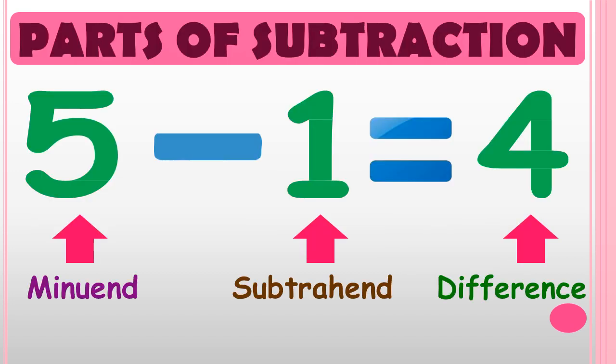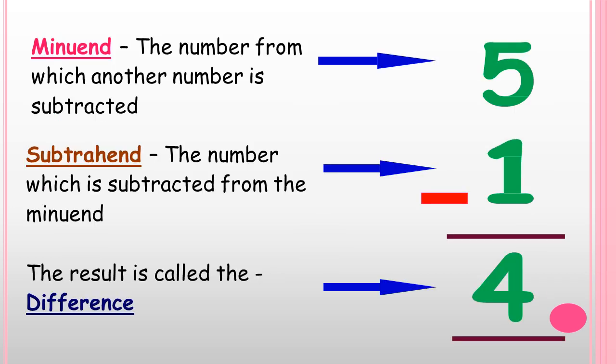Next, let us see the parts of Subtraction. Subtraction is composed of three parts. The first part is the Minuend. The second part is the Subtrahend. And the third part is the Difference. Minuend means the number from which another number is subtracted. Subtrahend means the number which is subtracted from the Minuend. The result is called the Difference.